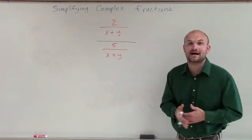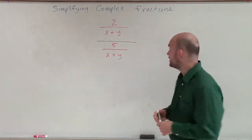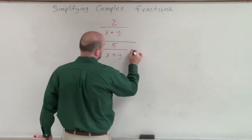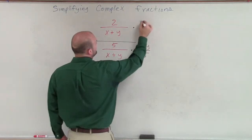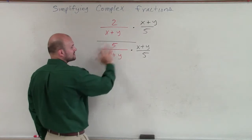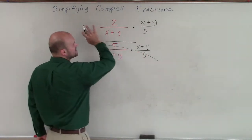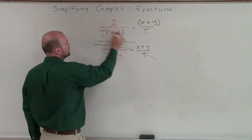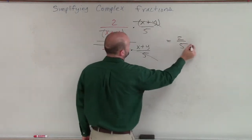So let's go back to what we've been dealing with before. When we have a fraction in the denominator or a fraction in the numerator, we want to multiply by the reciprocal. So we could multiply by the reciprocal, which would be x plus y over 5, times x plus y over 5. We know that any fraction multiplied by its reciprocal equals 1. Since we only have multiplication, we know that x plus y will divide out with x plus y, so we're just left with 2 fifths.